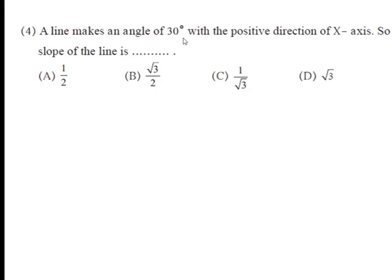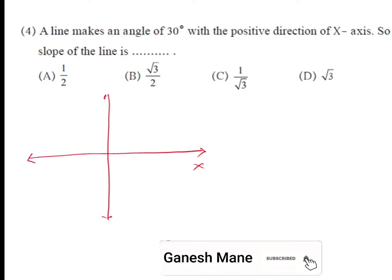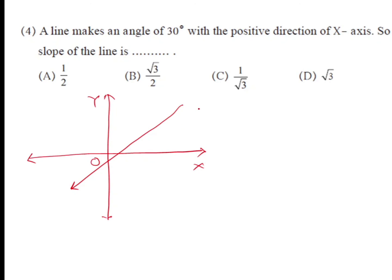Next question: a line makes an angle of 30° with the positive direction of the x-axis. What is the slope of the line? Using the Cartesian coordinate system, if a line makes an angle of inclination θ = 30°, then the slope is given by tan θ = tan 30° = 1/√3. So the slope of this line is 1/√3, which is option C. So option C is the correct alternative.